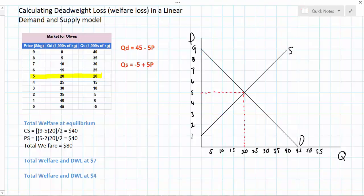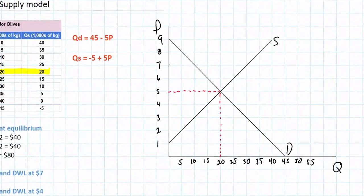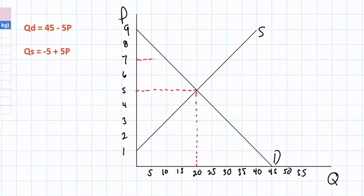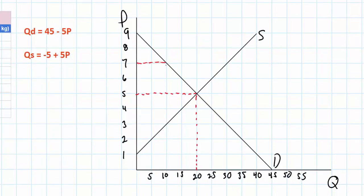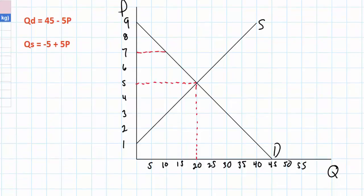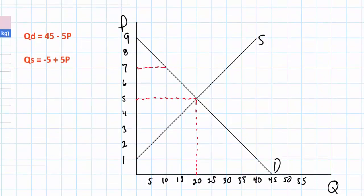Let's look at what happens when the price of olives is at $7 rather than the equilibrium of $5. At a price of $7 it's pretty obvious that the area of consumer surplus is smaller than it is at equilibrium. Higher prices mean consumers are willing and able to buy fewer olives, and those who do still buy olives enjoy less consumer surplus, so our consumer surplus is clearly smaller.